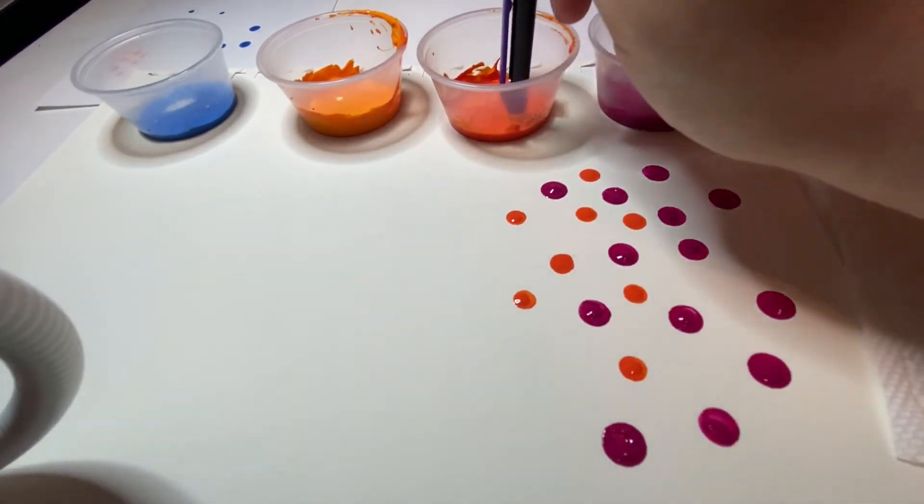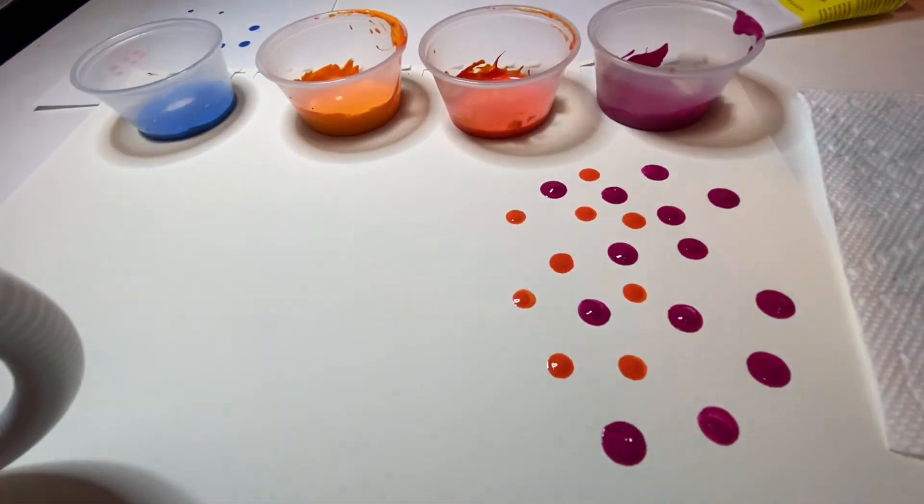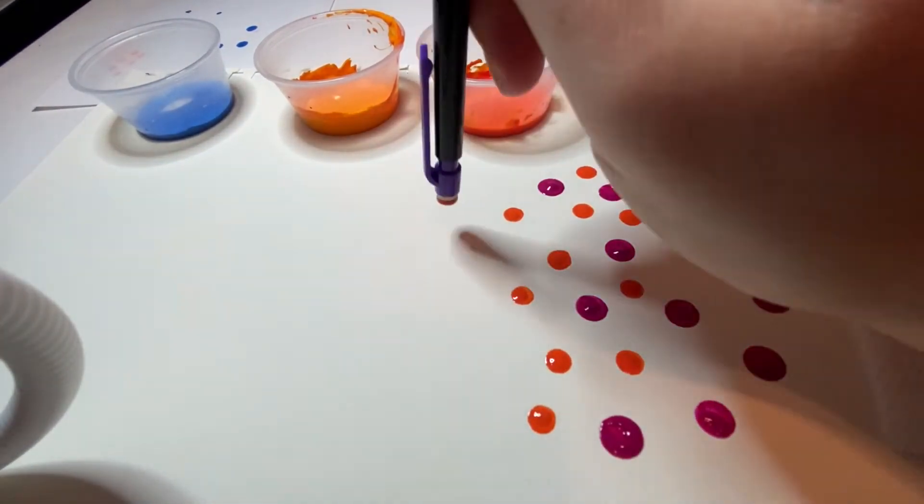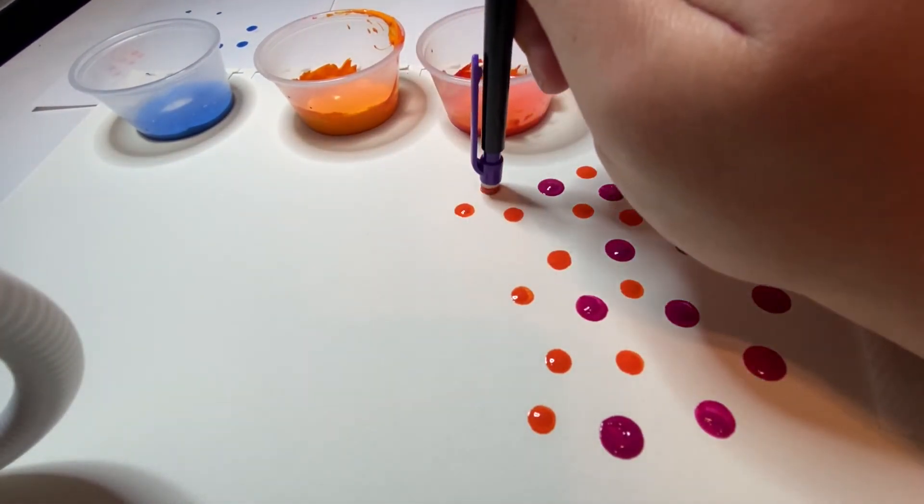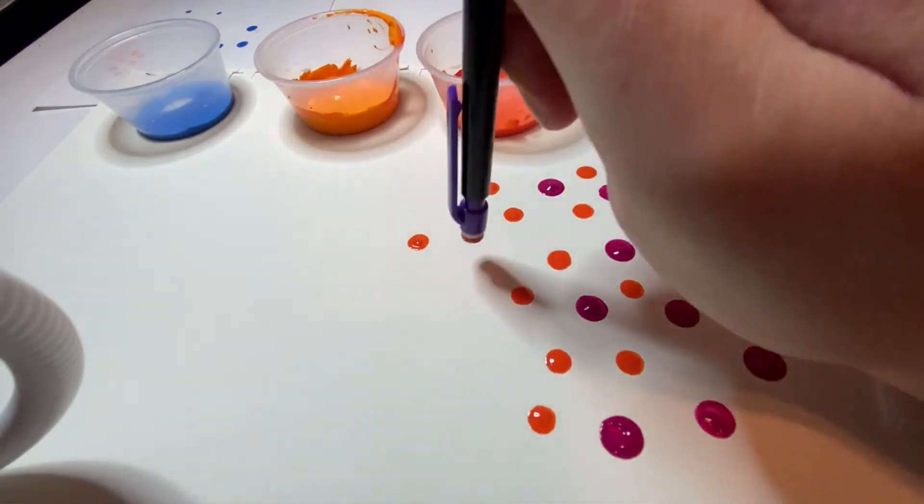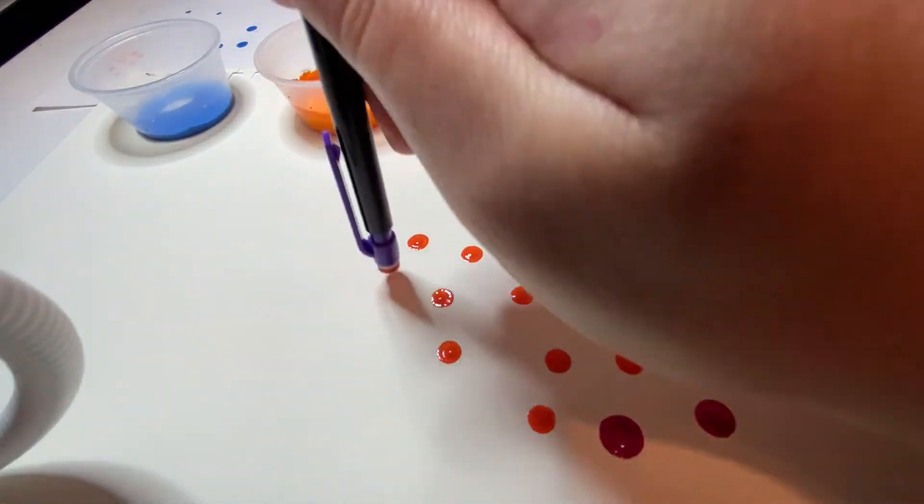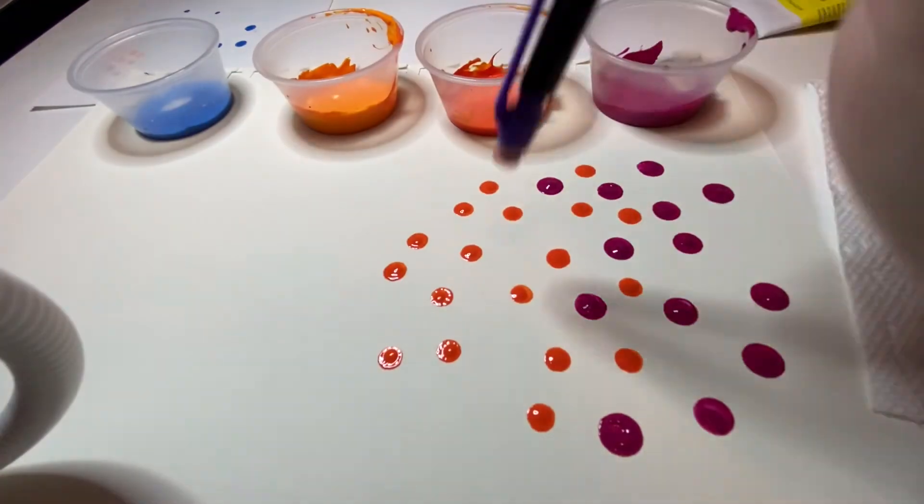So if you see any sheer parts in your dots go ahead and just dot right back over top of those. You can also take a little toothpick and kind of fill those in if you don't want to add any more paint.